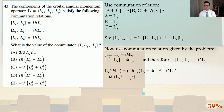We're going to use the commutation relation: [A, BC] = A[B, C] + [A, C]B. In our problem, A equals L_x, B equals L_y, C equals L_z.